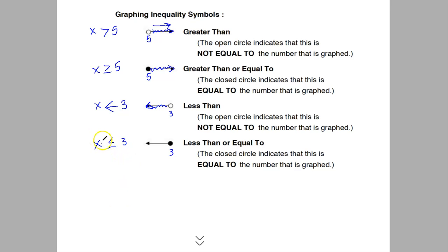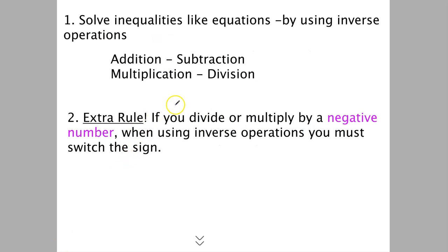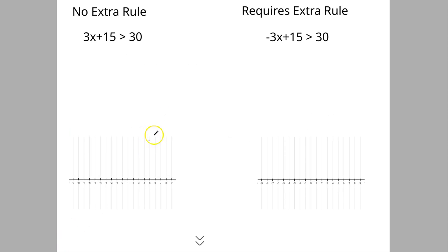I'll talk about why this is as we do more problems. What I mean is: keeping the variable on the left — the letter on the left — means this acts as the tip of the arrow in terms of what should be shaded in. Solving inequalities works just like equations by using inverse operations. If you see addition, you do subtraction; if you see multiplication, you undo it with division, and vice versa. But there is an extra rule: if you divide or multiply by a negative number when using inverse operations, you must switch the sign.